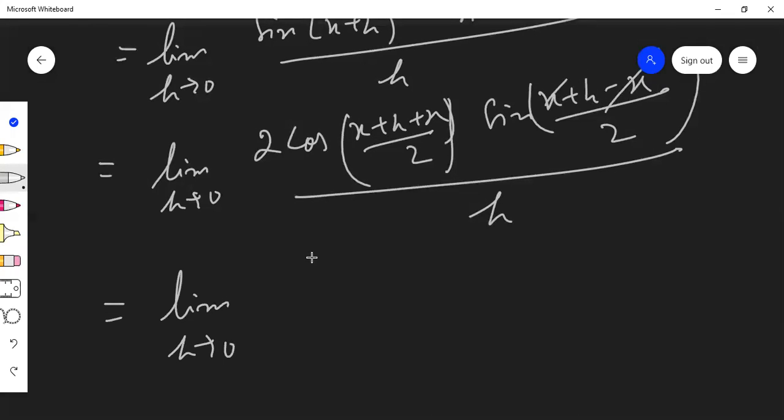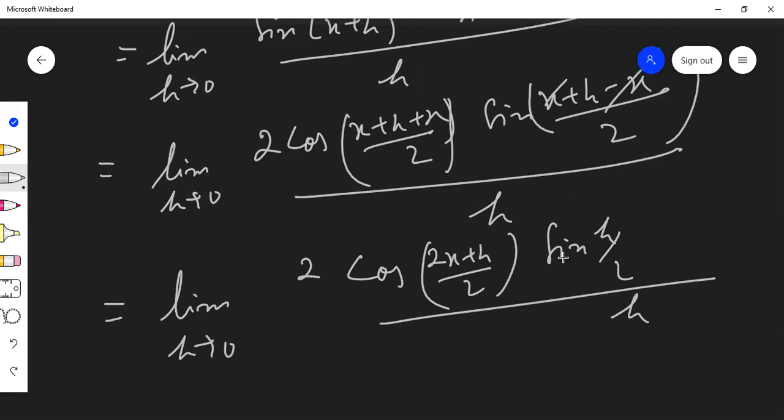Limit h tends to 0. So, 2 cos (2x plus h by 2). Sin (h by 2) divided by h. So, here we have sin theta by theta.